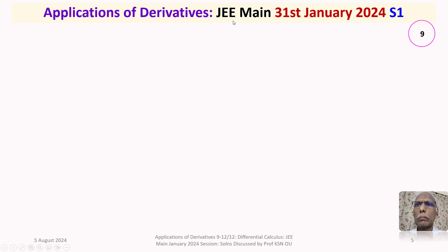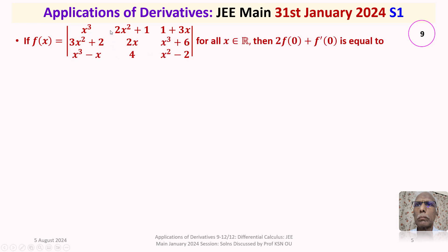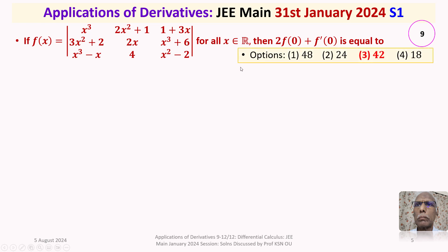This question appeared in the JEE Main Exam held on 31st January 2024 in the first shift. The given question is: if f(x) is a 3×3 determinant whose entries are polynomials, for all x belonging to R, then 2·f(0) + f'(0) is equal to — we are given 4 options.